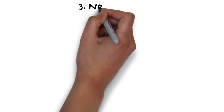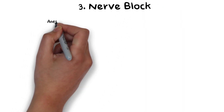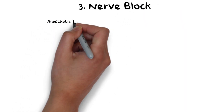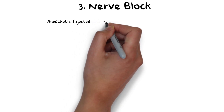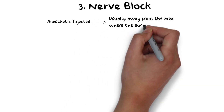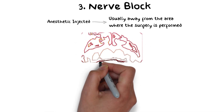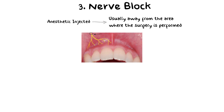The third and final type of injection technique is a nerve block. In the nerve block, the local anesthetic solution is deposited away from the site where we will be working — usually at a distant site — because the solution is deposited near the main trunk of the nerve involved. A much larger area is therefore anesthetized using the nerve block technique.